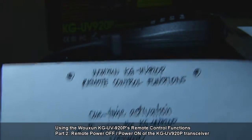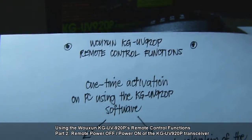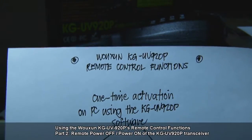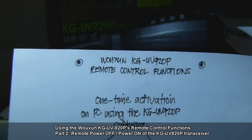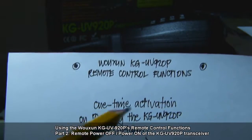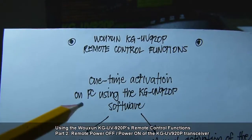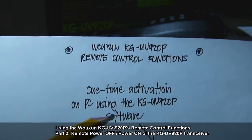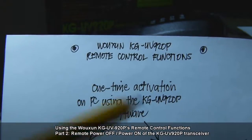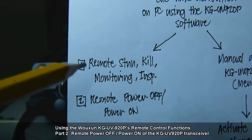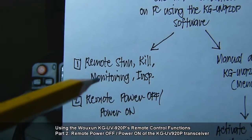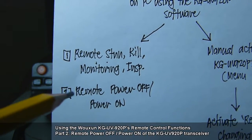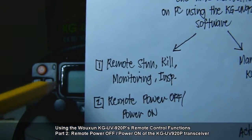Topmost in the flowchart is a procedure I have already shown from the previous video: a one-time activation on the PC using the KG-UV920P software. After that activation, we can proceed to either remote stun/kill monitoring or inspection, or a remote power off or power on of the KG-UV920P.